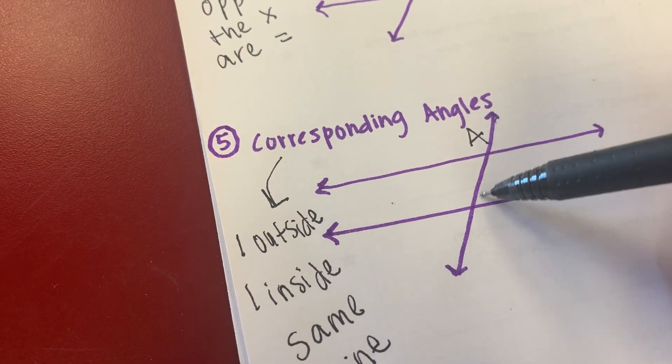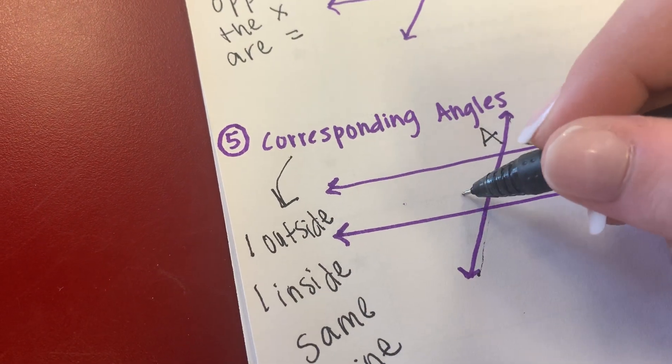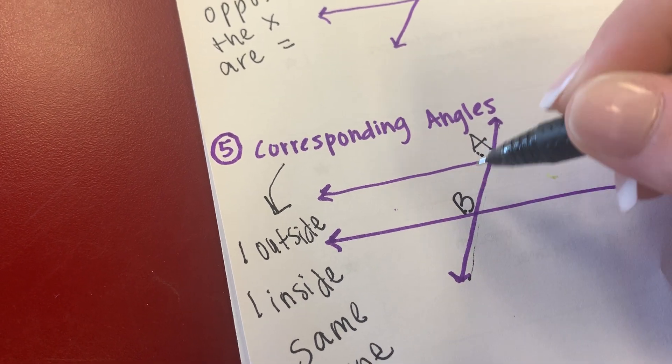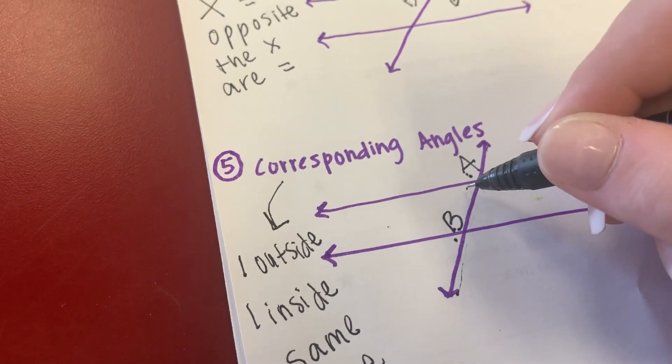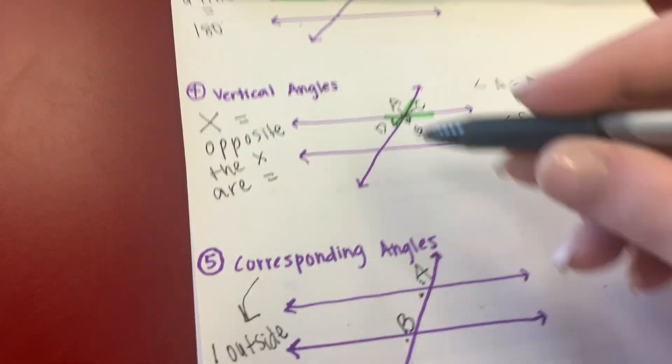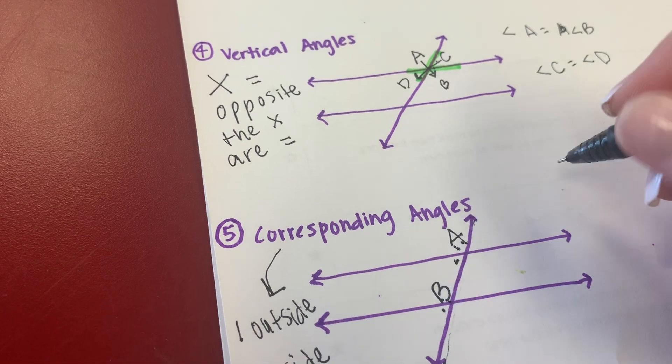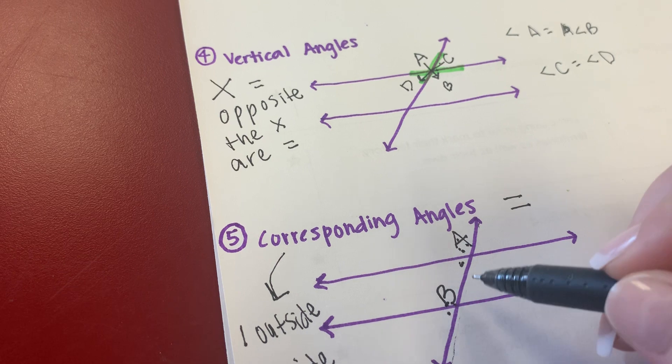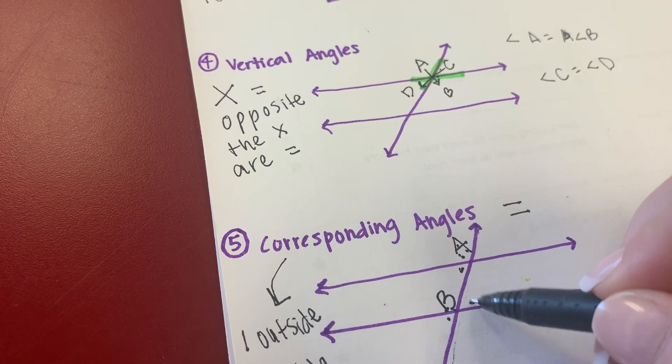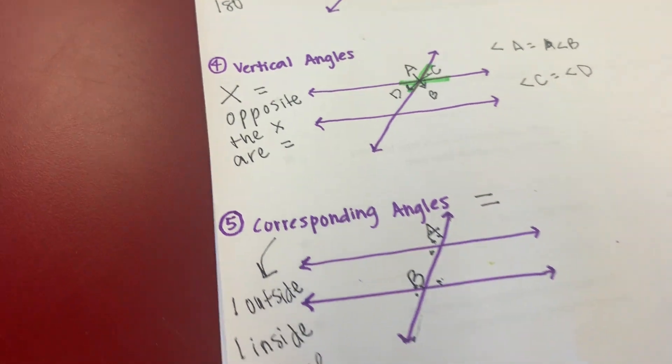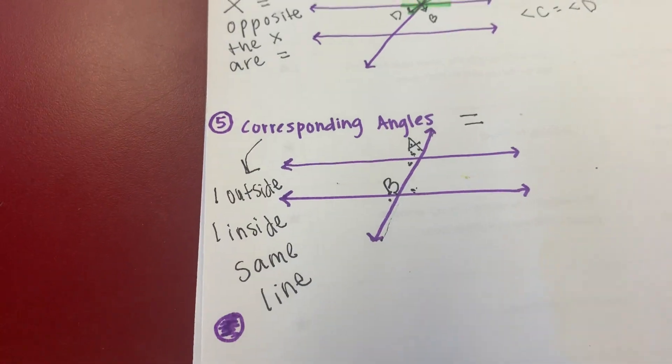If I'm going on the same line, angle B right here, one on the outside, one on the inside. It can't be here because then that would make it a supplementary angle, but outside, inside, and they equal. So A and B. It couldn't be over here because those are opposite. Those are on different lines. It's got to be on the same line.